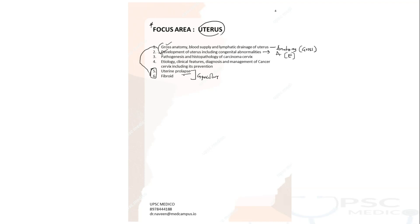Gynecology covers uterine prolapse — you need to understand the supports of the uterus, how a patient presents, the grading, and management. Similarly, uterine fibroids arise from the myometrium — what are the different types and how do you manage? So you are integrating anatomical knowledge with a surgical subject. Uterus also has cervix, and two important things come up: pathogenesis and histopathology of carcinoma of cervix from pathology, and management of CA cervix including prevention — the HPV vaccine — which was asked in 2022.